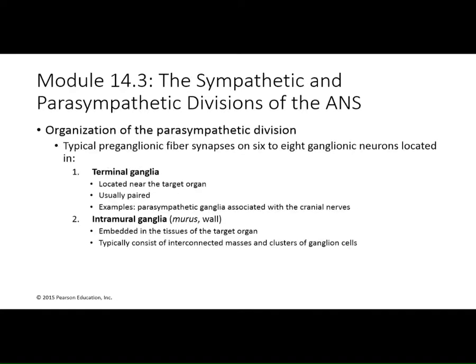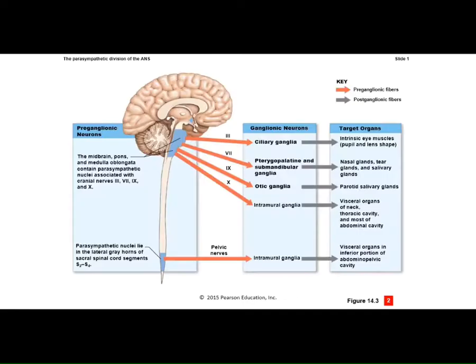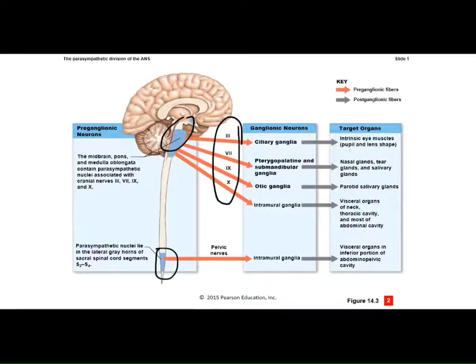For the parasympathetic nervous system, the ganglia are terminal — far away or actually within the wall of the target organ, referred to as intramural ganglia. Originating from cranial and sacral regions, the four cranial nerves involved are 3, 7, 9, and 10. During parasympathetic activity, the pupil gets smaller when you're relaxed, and the salivary and tear glands are all activated by cranial nerves 7 and 9.